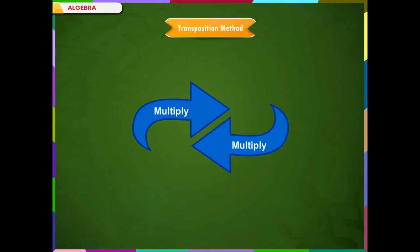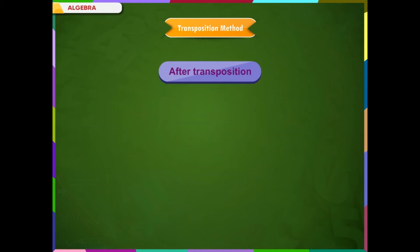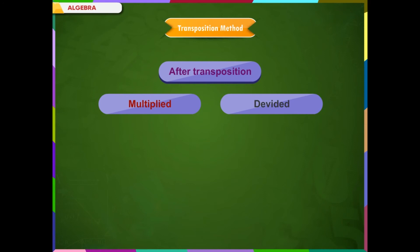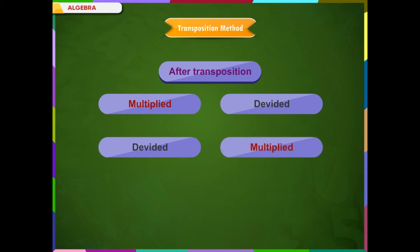The transposition method similarly holds true for multiplication and division, as multiplication and division are inverse to each other. Therefore, if there is a term multiplied on one side, when transposed, it gets divided to the other side. Similarly, if there is a term divided on one side, when transposed, it gets multiplied to the other side.